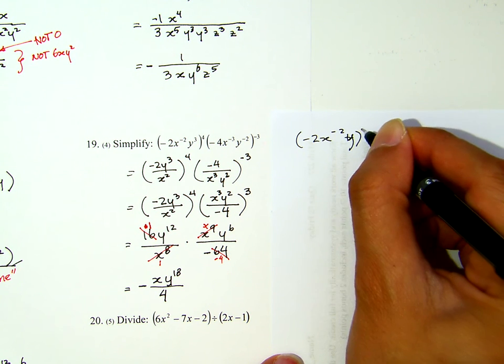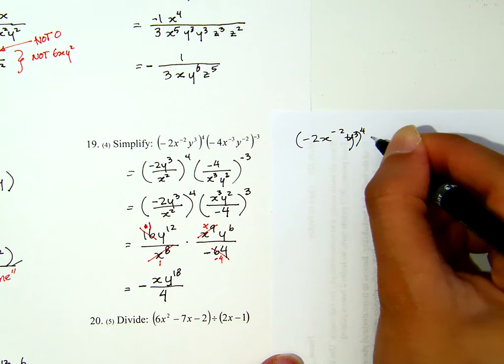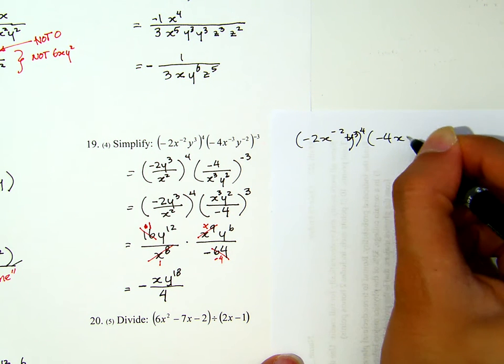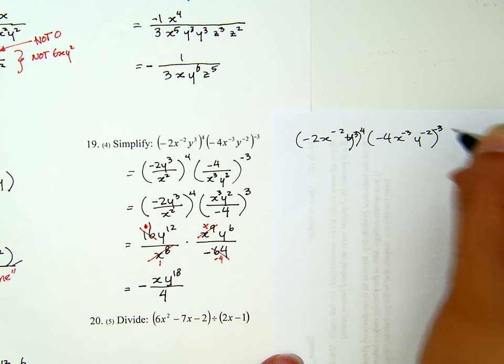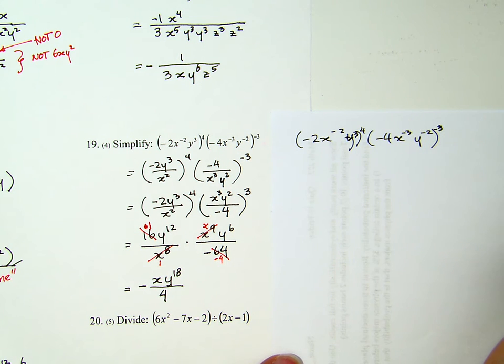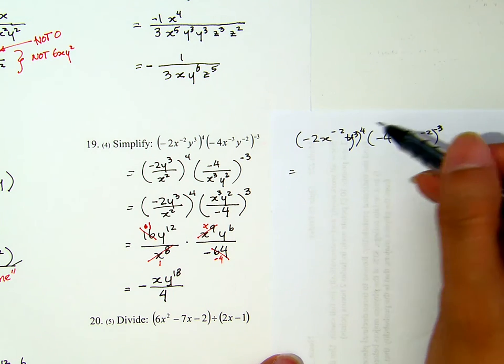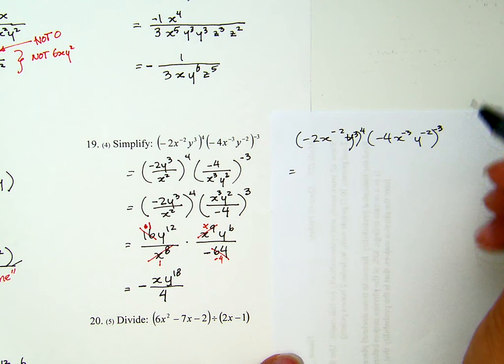Let me copy the question correctly. Negative 4, x to the negative 3, y to the negative 2, to the power of negative 3. I just copy the question there. Now, what I will do is the following. I will first distribute the exponent to each one of the factors.